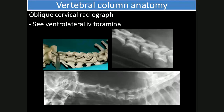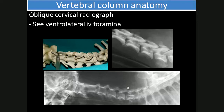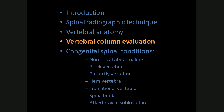Regarding oblique cervical radiographs: a skeletal specimen viewed ventrally shows the intervertebral foramina opening ventrolaterally. On a lateral image we can't see them, but once we oblique the patient — with the patient in a VD position and rotated 45 degrees either left or right — this allows visualization of the ventrolaterally opening intervertebral foramina, where we can look for mineralized disc material or other lesions. The correct terminology for these oblique views would be either a ventral 45-degree left dorsal right oblique, or a ventral 45-degree right dorsal left oblique.